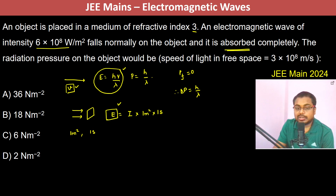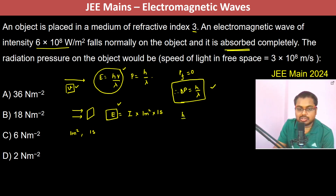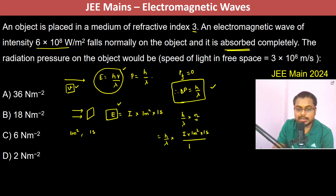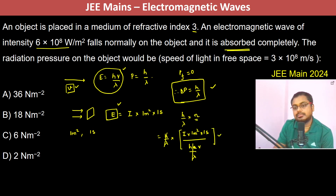The total momentum change of all the photons is equal to h/λ multiplied by the number of photons. The number of photons is found from the total energy incident — that is I × 1 m² × 1 s — divided by the energy of each photon, which is hc/λ or hν/λ. So h/λ cancels out, giving us the total momentum change.